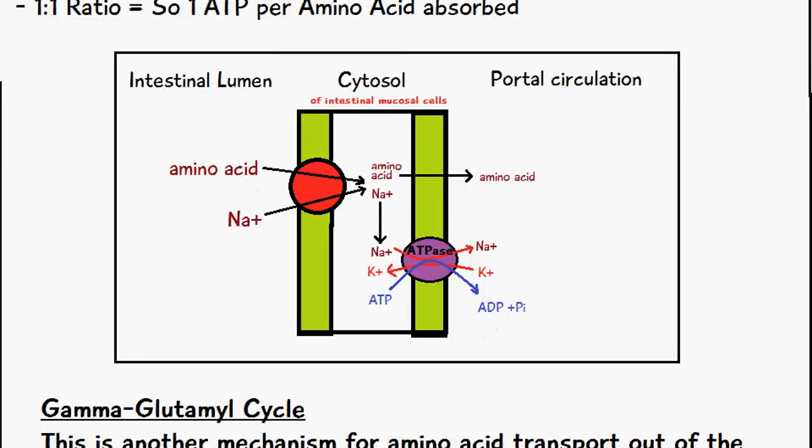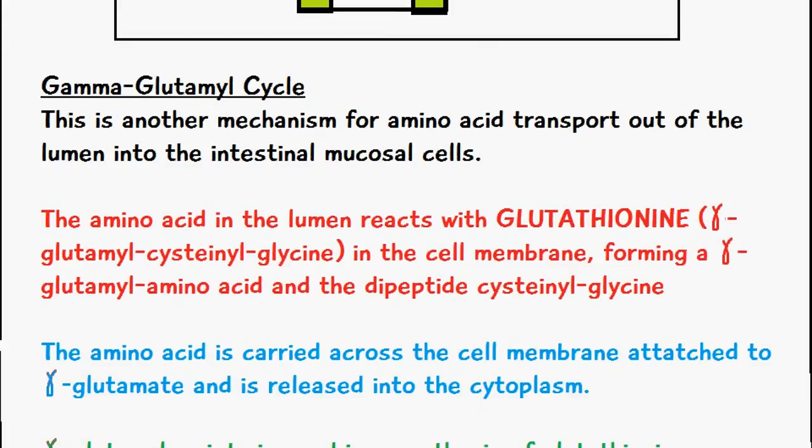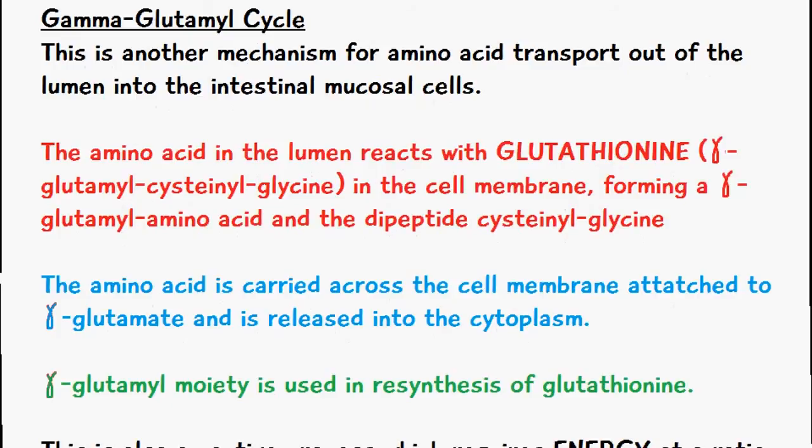The second mechanism for absorption of amino acids is the gamma glutamyl cycle. This is another mechanism for transport out of the lumen into the intestinal mucosal cells.